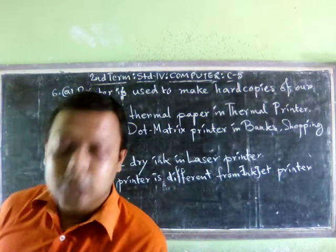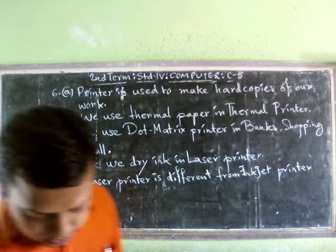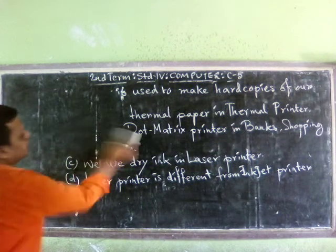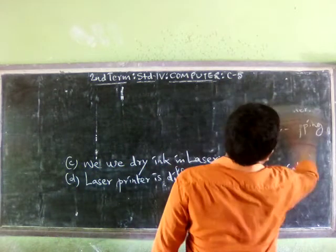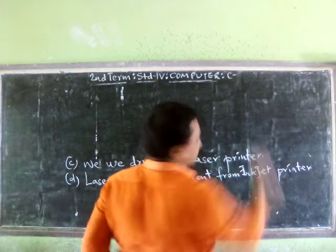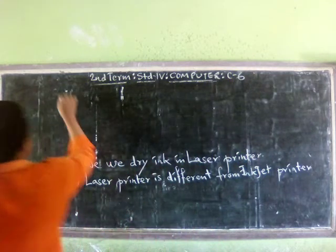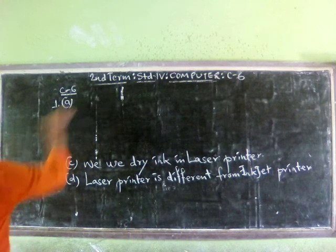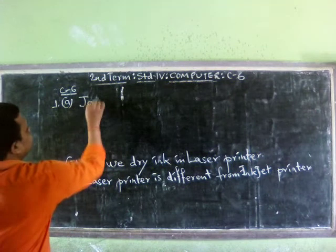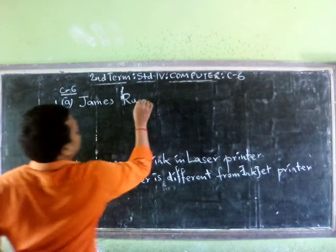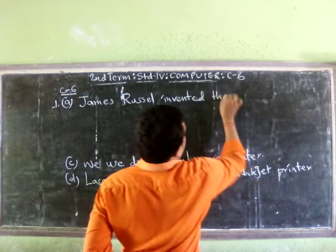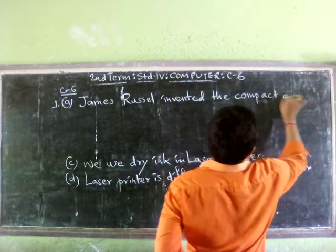Now we are moving to chapter 6. Chapter 6, question number 1A: who invented the compact disc? James Russell invented the compact disc. James Russell, spelled R-U-S-S-E-L-L.